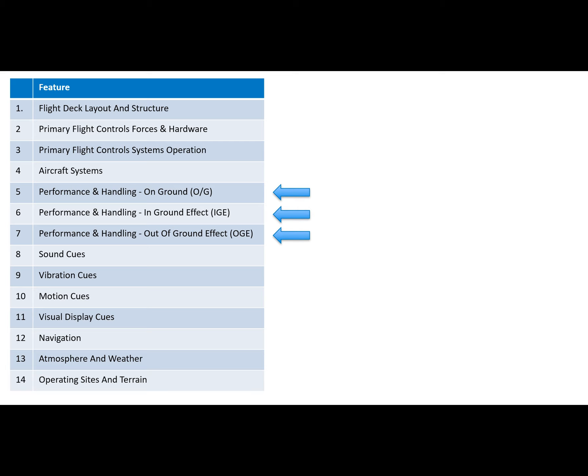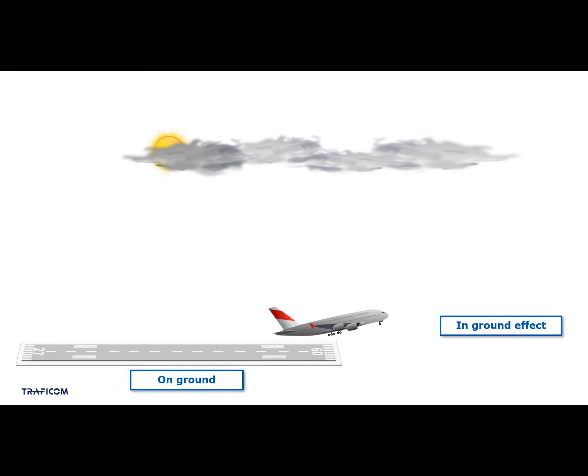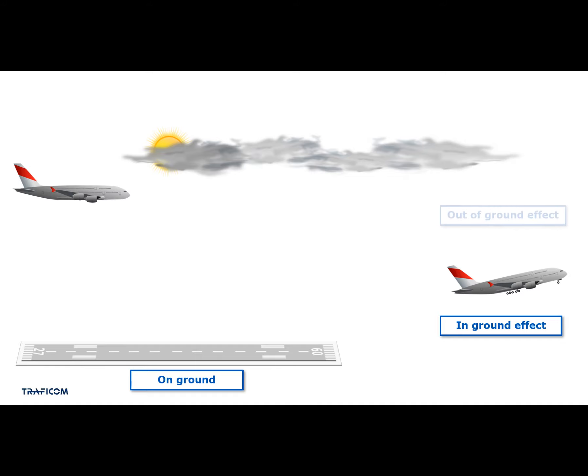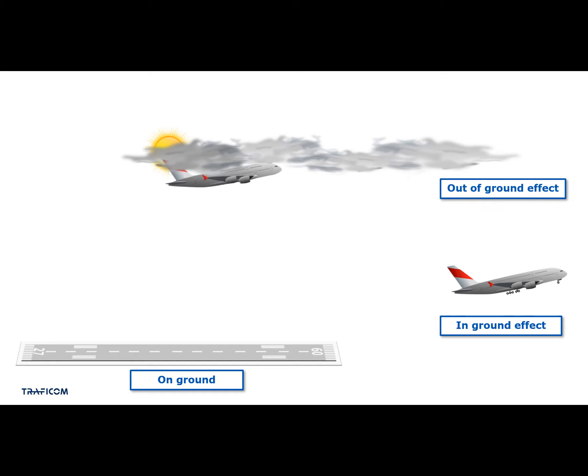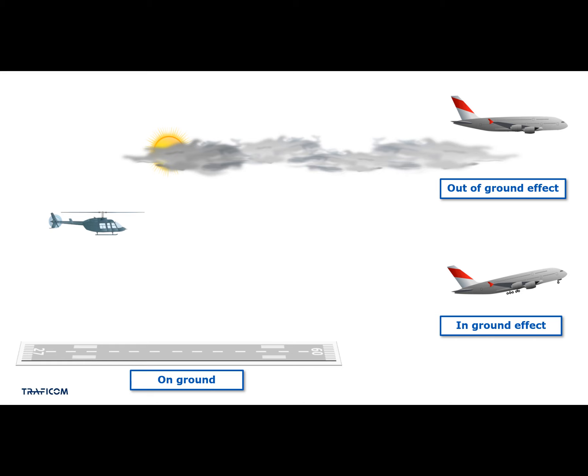Features five, six, and seven concern the aircraft performance and handling — how it behaves and flies, and what is the fidelity of the ground and flight models. Performance and handling is divided into three flight regimes: on ground, in ground effect, and out of ground effect. You could build a device that is generic on ground and in ground effect but specific for out of ground effect — such a device would not get training credits for takeoffs and landings, but could be used for training tasks occurring higher in the air. This separation is also beneficial for helicopter training, and helps control costs by selecting only the needed levels for each feature.